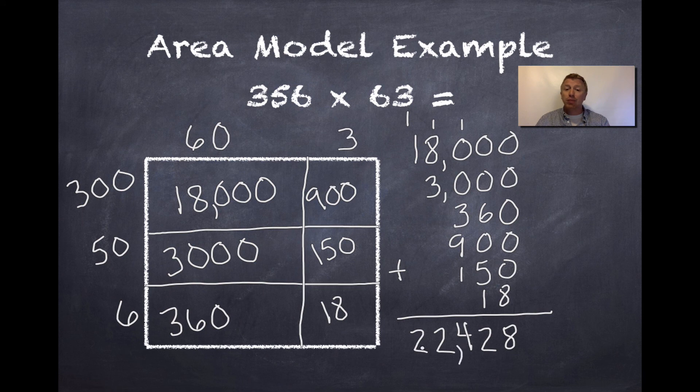All right guys, we got our product or our answer. 356 times 63 happens to be 22,428. I hope you enjoyed watching this example of an area model. Now, I want you to go out and try it.